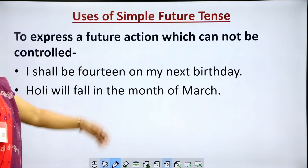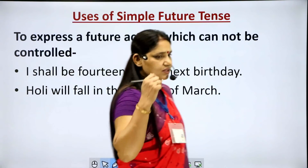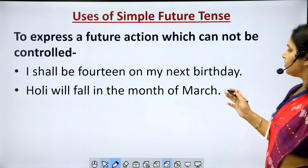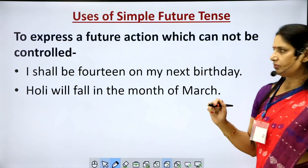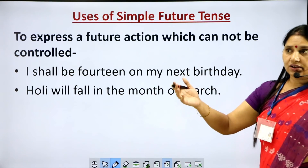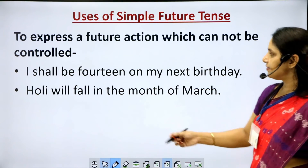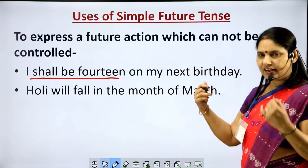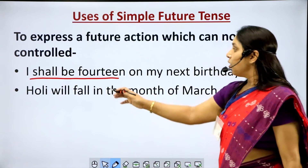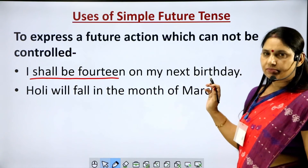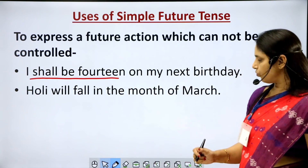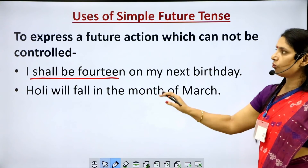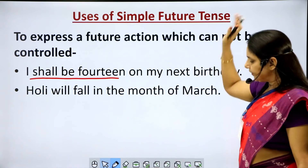Uses of simple future tense. First, to express a future action which cannot be controlled — something that will happen in future and you cannot stop or control it. Example: 'I shall be 14 on my next birthday.' — a boy cannot control his age. 'Holi will fall in the month of March.' — this also cannot be controlled. Both these things which are to take place in future and cannot be controlled are expressed in the simple future tense.